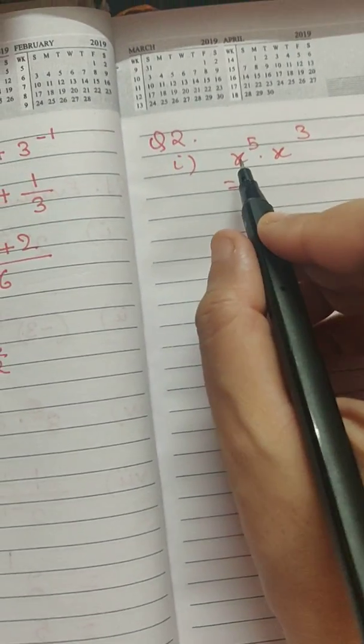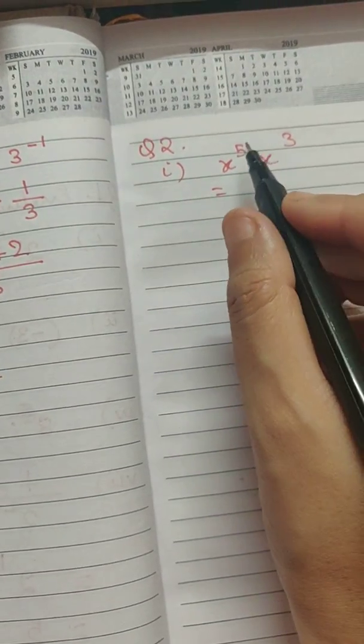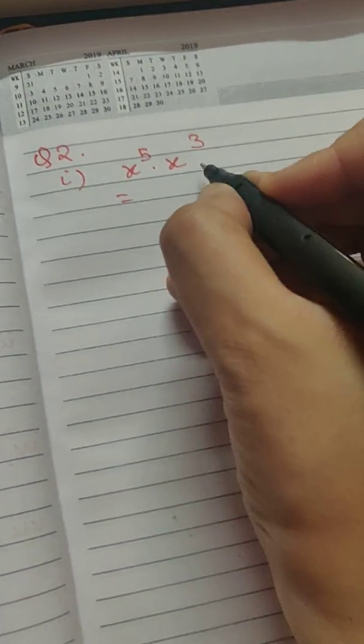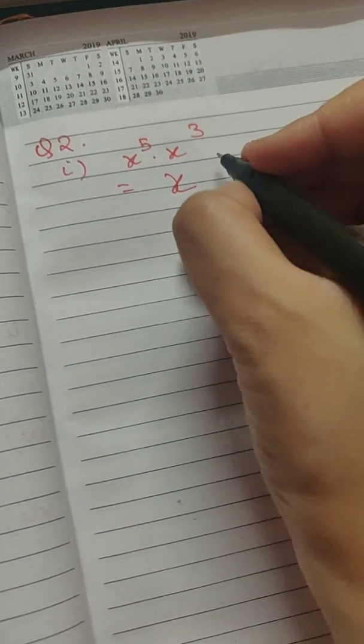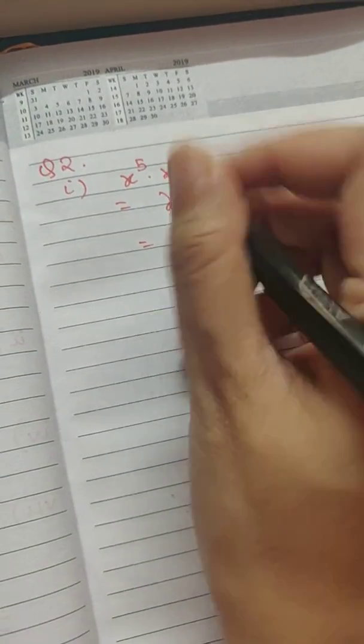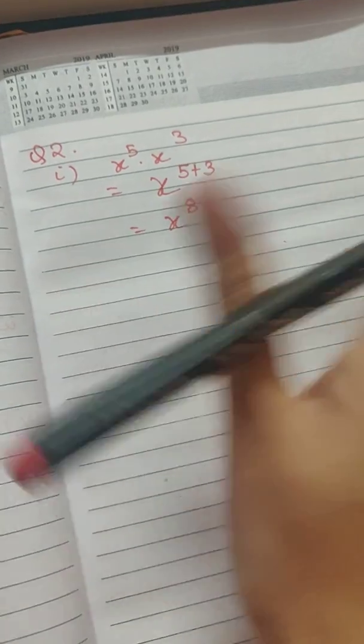In this case, you can see that both the bases are same, the exponents are different. So what we are going to do is keep the base as it is and add the exponents, giving us the answer of x to the power 8. You can see that it is a pretty easy sum.